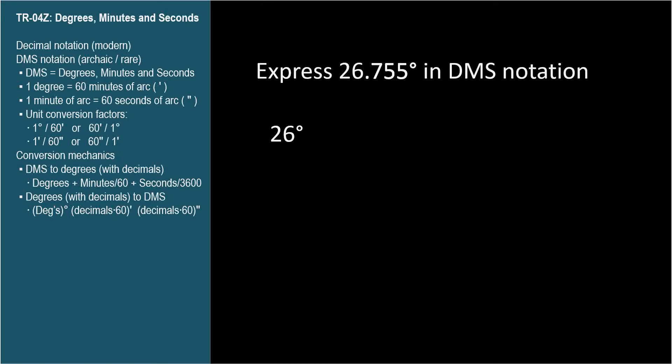Our answer will be 26 degrees, then some minutes and seconds. To determine how many minutes, take the fractional part, in this case .755, and multiply by 60. What we're really doing is multiplying .755 degrees by 60 minutes per degree. The degrees cancel, leaving us with minutes. 45.3 minutes, actually.